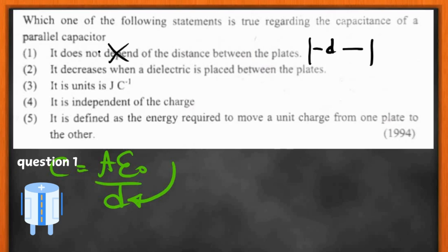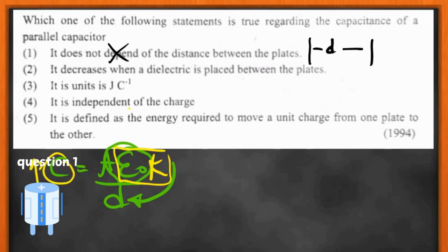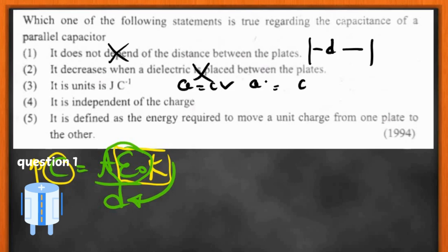The second option says capacitance decreases when a dielectric is placed between the plates. When a dielectric is placed, ε₀ is replaced by k·ε₀, so the C value increases — the second answer is also wrong. The third option says the unit is joules per coulomb. Using Q = CV, we get C = Q/V, so the unit is coulombs per volt, not joules per coulomb.